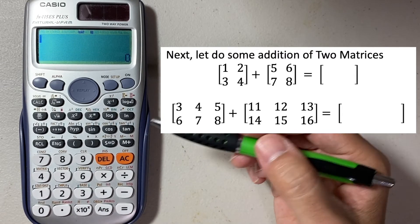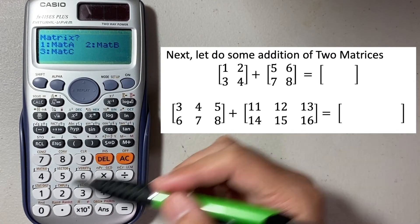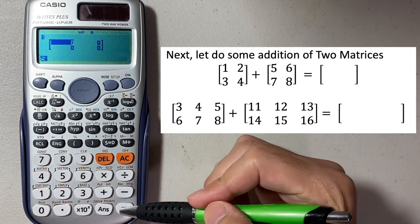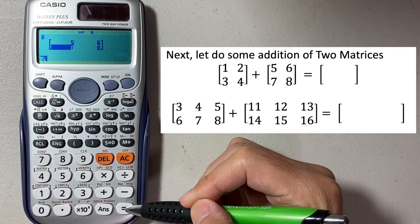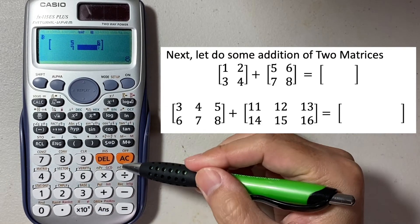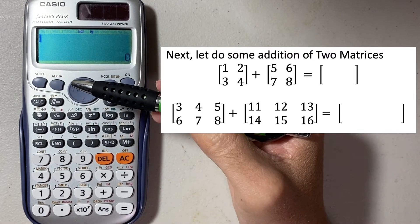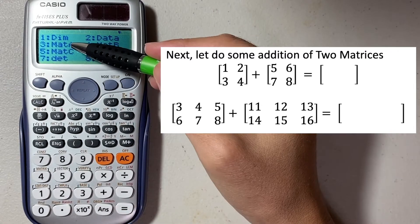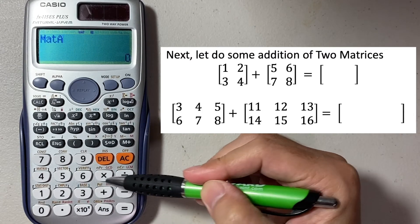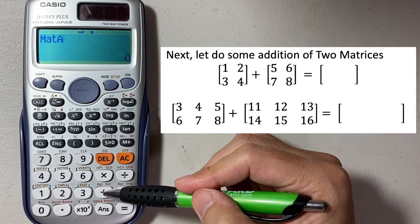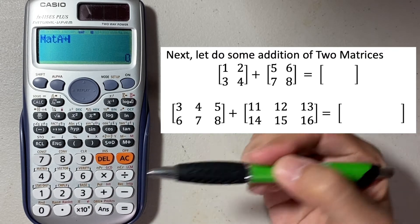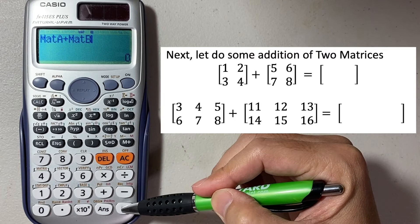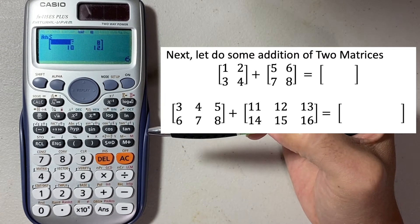Now we're going to store another matrix. Go to mode, then 6, matrix B — number 2. Same thing, 2x2, number 5. Enter 5, 6, 7, 8 and store it. Now we have matrix A and B stored. Let's do matrix A plus matrix B. Go to shift, matrix, select 3 which is matrix A. Then press plus, shift, matrix, matrix B — number 4. Press equal. And this is the addition result for matrix A and B.